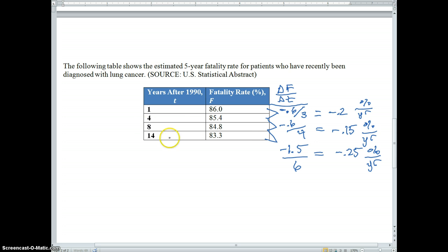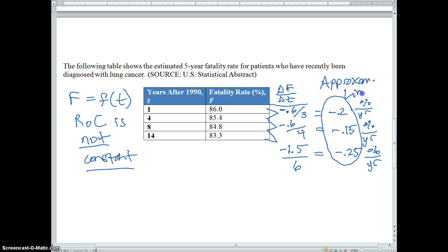What we're trying to get at here is that, number one, this has a variable rate of change. F is a function of time. In other words, fatality rate is a function of time, but the rate of change is not constant. Now, we could do linear regression on it if we feel that the slopes are fairly stable. You look at these, and they're fairly close to negative 0.2, all of them. So, you might tell yourself, well, it's approximately linear.